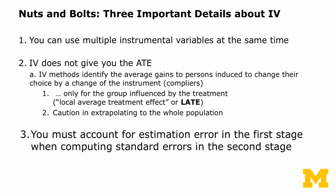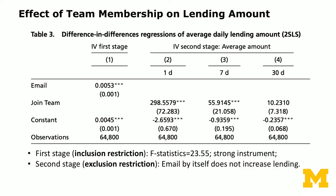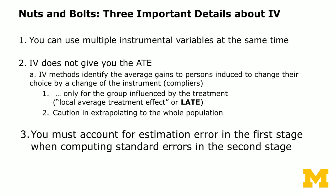You have to be careful not to extrapolate the LATE to the whole population. The third important point is that you must account for the estimation error in the first stage when computing the standard errors in the second stage. In the second stage, we regress the outcome — the difference in lending amounts — on P-hat, which is what we obtain from the first stage. Statistical programs like Stata automatically combine the two stages and give you the correct standard errors.